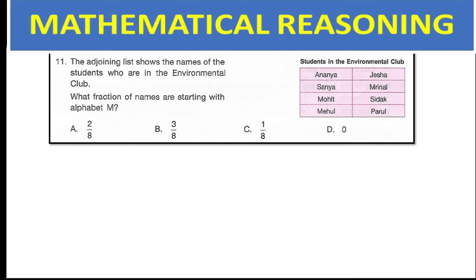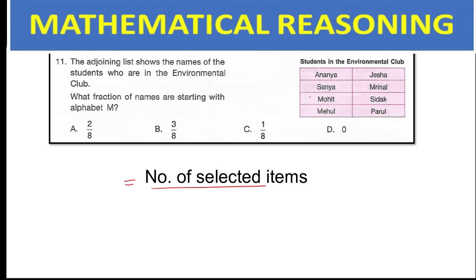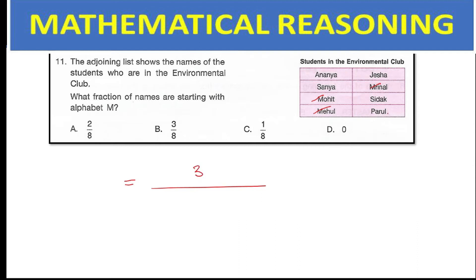The first question here: the adjoining list shows the names of students who are in the environmental club. What fraction of names are starting with alphabet M? Count the names starting with M: 1, 2, and 3. The total number of names in the environmental club is 8. So your answer is 3/8, which is option B.